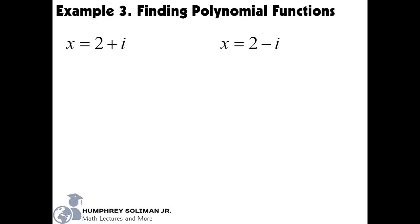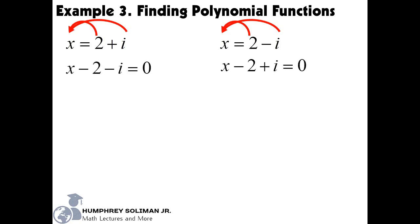Our next problem, example number 3, is finding a function with imaginary roots. Suppose we have x equals 2 plus i, and x equals 2 minus i. Again, we need to equate these values of x to 0 by transposing the complex numbers to the left side of the equations. In doing so, this changes the sign again for each number. And if we multiply these quantities, it will just become 0.